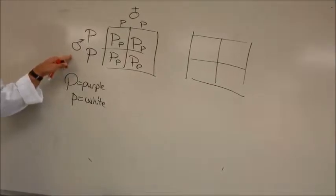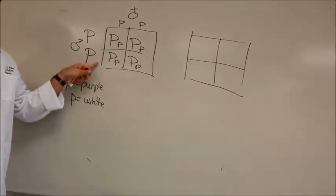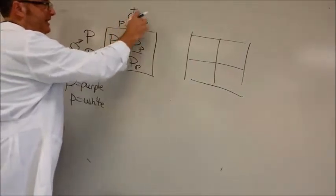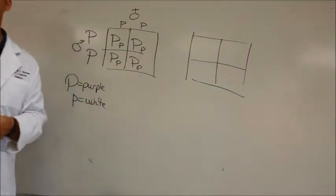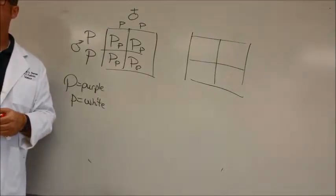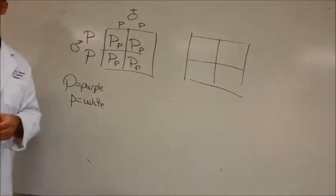The father was homozygous dominant for purple. The mother was homozygous recessive for white. But all of the babies were what? Purple. They were all purple, right? All of them. Four out of four.